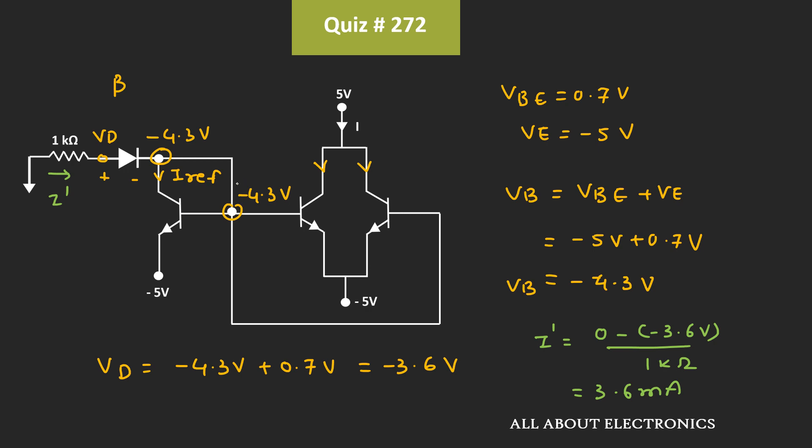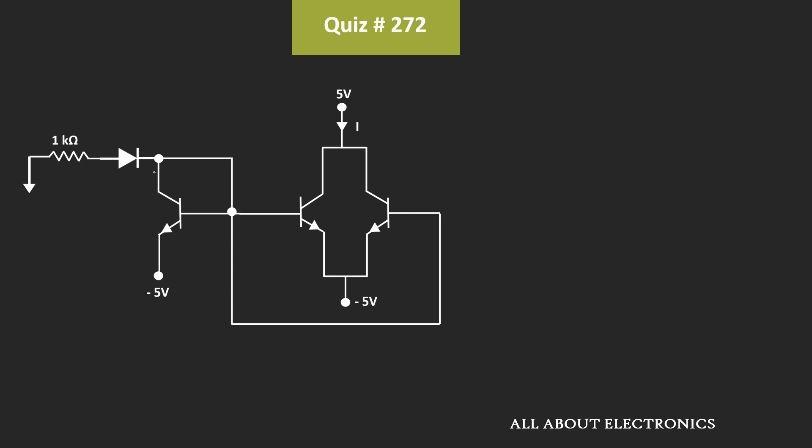And here, since the value of β is very high, we can assume that the current flowing through this reference transistor, or this I reference, is equal to I'. That means, this I reference is approximately equal to I', which is equal to 3.6mA.